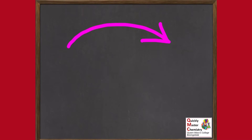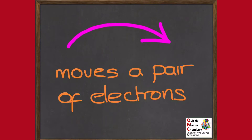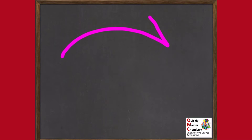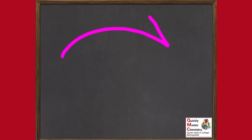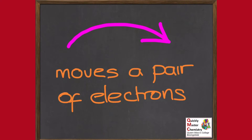A key feature of organic mechanisms is these curly arrows, and it's important that we understand what they mean. There are actually two types of arrows we can use in organic mechanisms. The one with a whole head shows the movement of a pair of electrons — two electrons moving. This video will focus specifically on the arrow with the whole head showing the movement of a pair of electrons, as it's by far the most common — most mechanisms involve pairs of electrons moving.